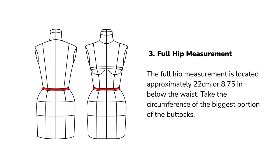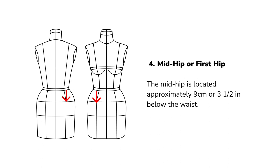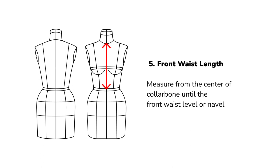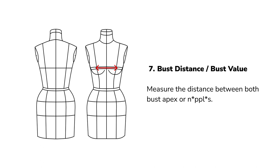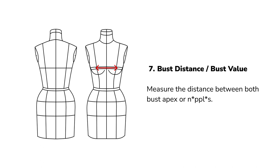Full hip measurement: typically located approximately 22 centimeters below the waist — measure the circumference of the widest part of the buttocks. Mid hip or first hip: typically located approximately 9 centimeters below the waist. Front waist length: measure from the center of the collarbone to the front waist level or the navel. Back waist length: measure from the nape of the neck to the back waist level. Bust distance or bust value: measure the distance between both bust apexes or nipples. Bust point or bust length: measure from the shoulder neck point to the nipple or bust apex.